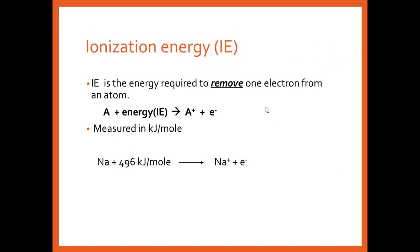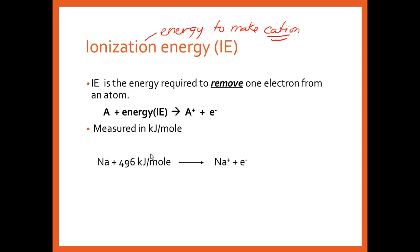Ionization energy — that's another trend you graphed. It's the energy to remove one electron. All these definitions — ionization energy, atomic radius — you need to know them. Ionization energy: energy to make a cation, which means you are removing an electron. In chemistry notation, sodium takes some energy — it's endothermic, a positive energy needed — you form a sodium ion and a free electron. That free electron will actually go to an anion.